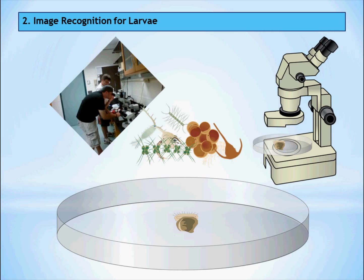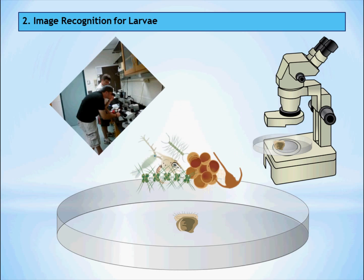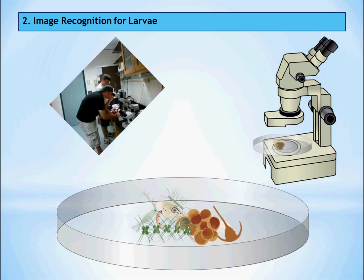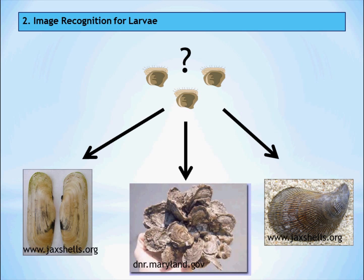One of the biggest challenges we face is identification. Oyster larvae are microscopic and there's a lot of other plankton floating around out there — we have to sort them out. Even after they are sorted out, they look like other bivalves and fish eggs. Bivalves include clams, mussels, and oysters, and they all have microscopic larval stages that look similar under the microscope.